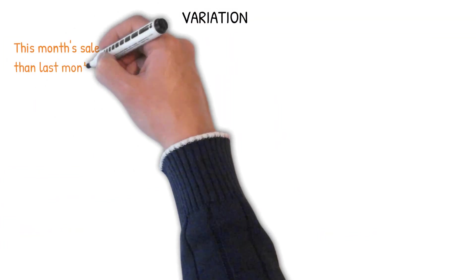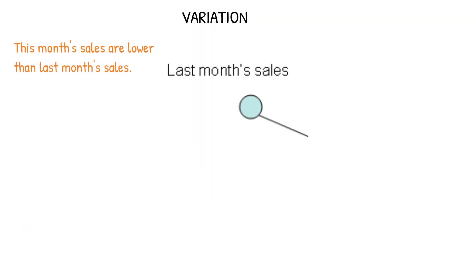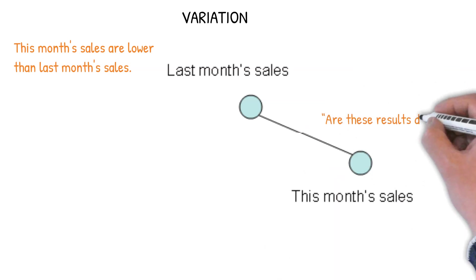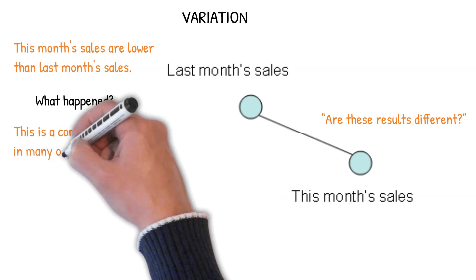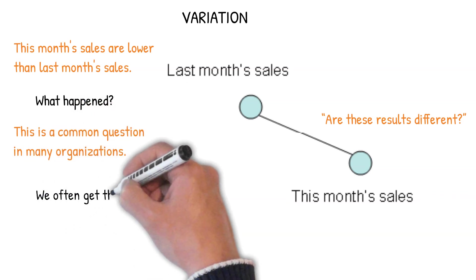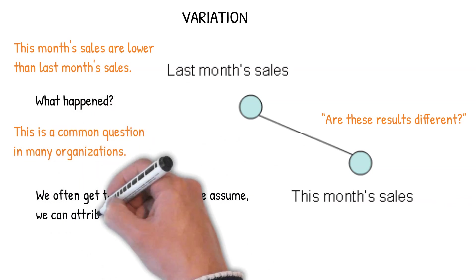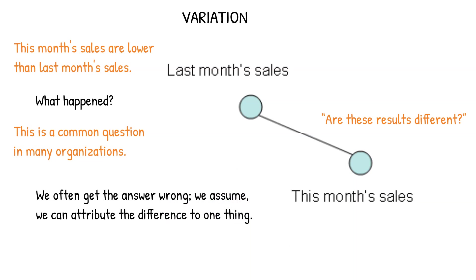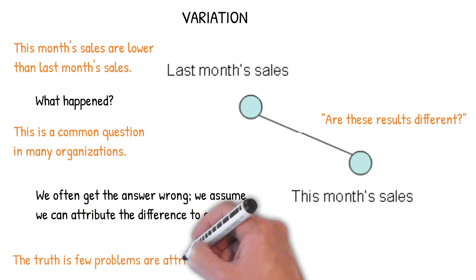So let's go back and talk about variation. This month's sales are lower than last month's. Sometimes happens. And the question is, are those results really different? Quite often management says, what happened? Why are they less? It's a common question. And we often get the answer wrong because we assume we can attribute the difference to one thing. The truth is few problems are attributable to one person or one event.